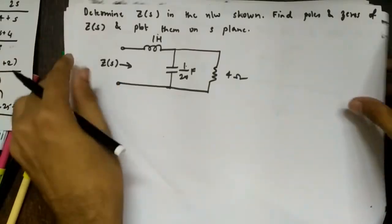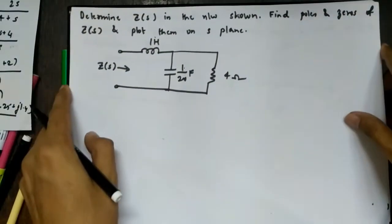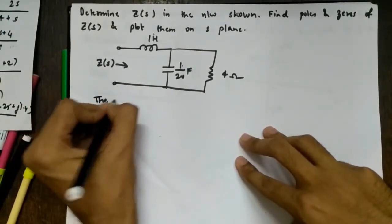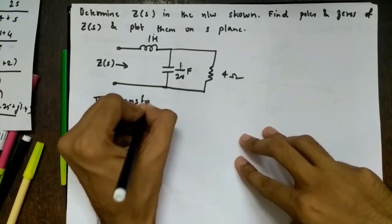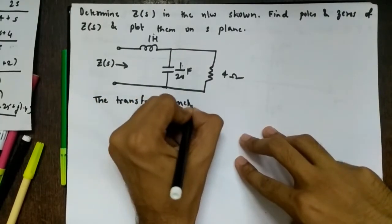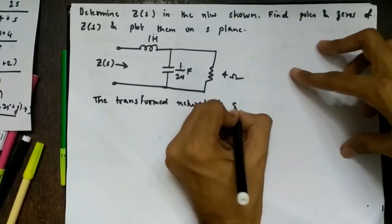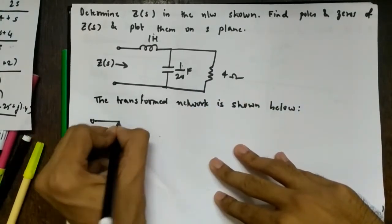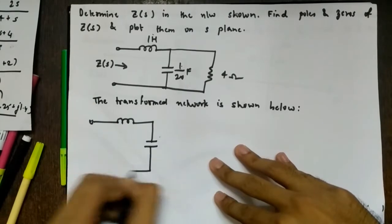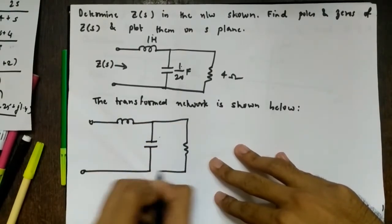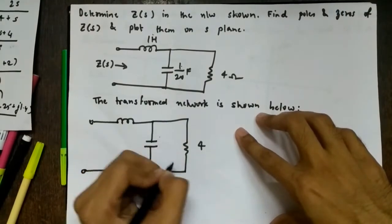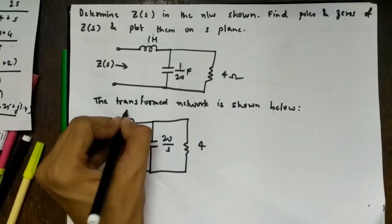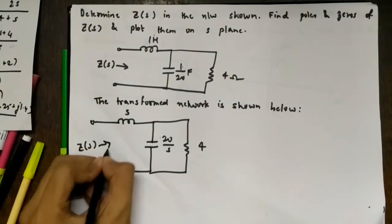The next problem asks us to determine Z(s) for a network, then find and plot its poles and zeros on the s-plane. Drawing the transformed network: the inductor becomes sL = s, the capacitor (1/20 F) becomes 1/Cs = 20/s, and the resistor remains 4 Ω.